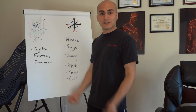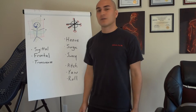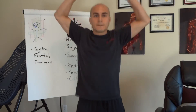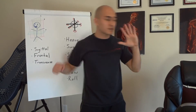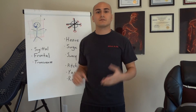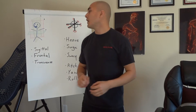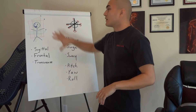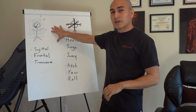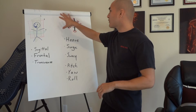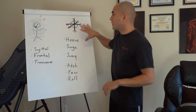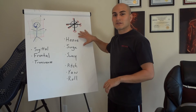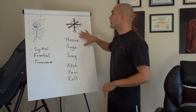Sagittal is stuff like this — forward and back movements. Circular Strength Training takes that a step further and expands upon it even more by including the Six Degrees of Freedom.